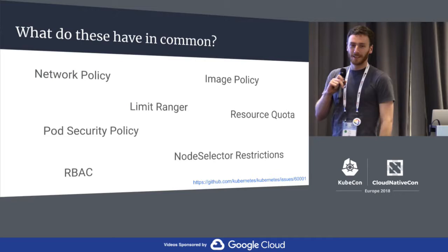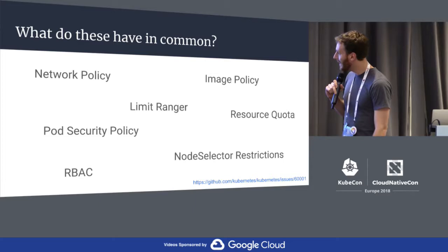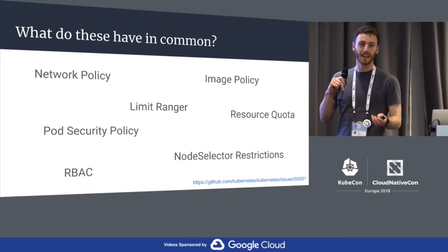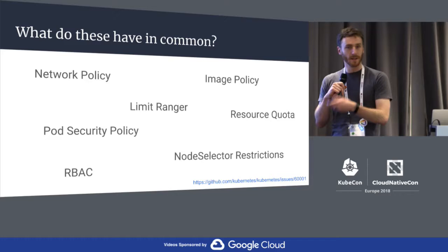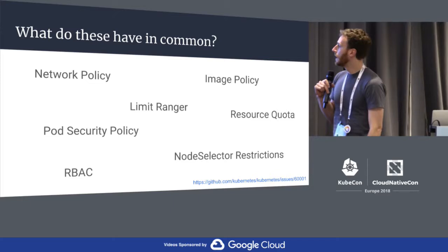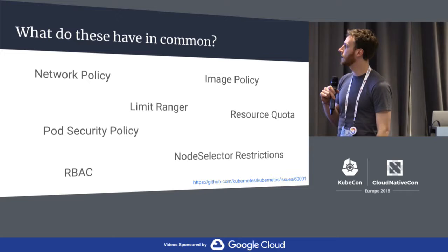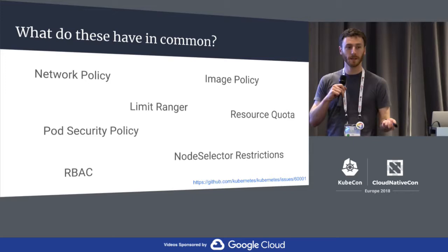Here's a bunch of policies and policy-like things that we have in Kubernetes. What do they all have in common? They're bound in different ways. Some of these things are cluster level, some are namespace level, some are bound to users, some are bound to service accounts, some are bound to namespaces. They're all specified through different schemas that don't have a lot of consistency between them.